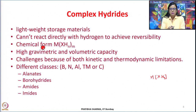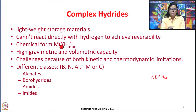Some complex hydrides can give 13, 16, or even 18 weight percent hydrogen storage capacity, and a higher volumetric capacity of even 150 kg per cubic meter. Their general chemical formula can be represented as M[XHn]m, where M is a metal and X can be a metal or non-metal — depending on which, the bonding with hydrogen can be covalent or ionic-covalent. The challenges are in terms of both kinetics and thermodynamic limitations.